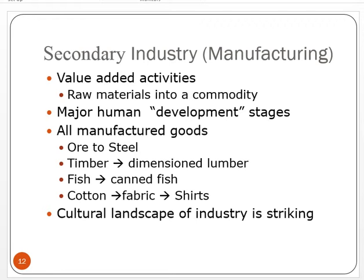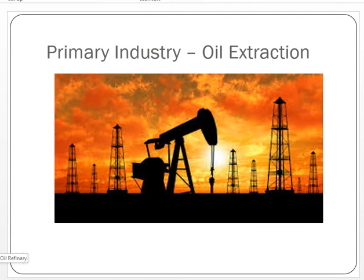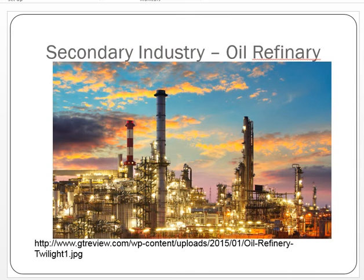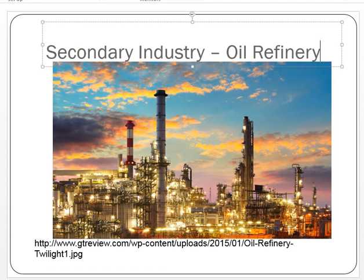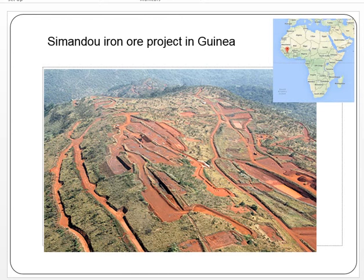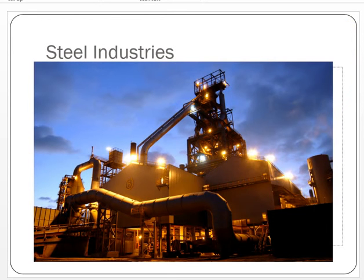The landscape of secondary industries is also striking. Here is an oil refinery as the secondary industry to oil extraction — think of the huge infrastructure, the electricity, water, roads, workers, and pollutants from smokestacks. Similarly, here is an example of ore being smelted and produced into steel, requiring a lot of electricity, power, water, and generating a lot of waste including tailings that have to be carted away and dealt with.